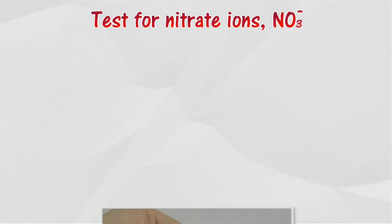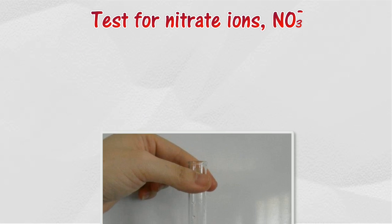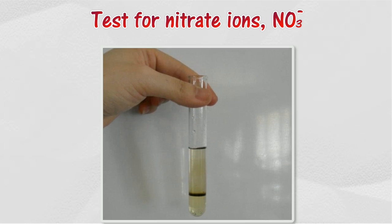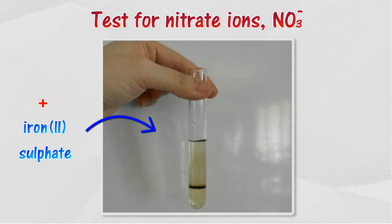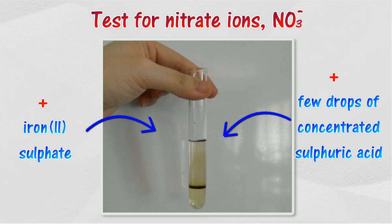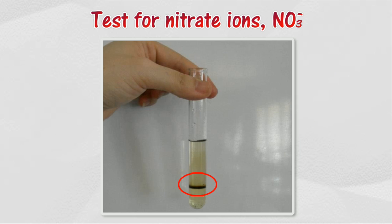Nitrate ion test: about two cubic centimeters of nitrate solution is mixed with dilute sulfuric acid and iron(II) sulfate solution in a test tube. Then a few drops of concentrated sulfuric acid are added slowly and carefully down the side of the test tube. A brown ring forms between the layers of concentrated acid and the nitrate mixture. The brown ring, composed of a complex ion, confirms the presence of nitrate ions.